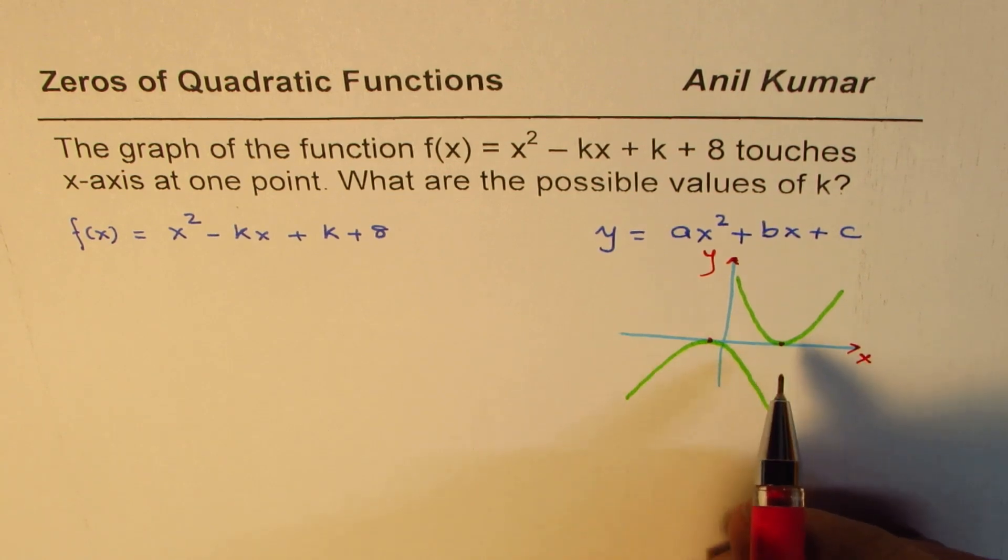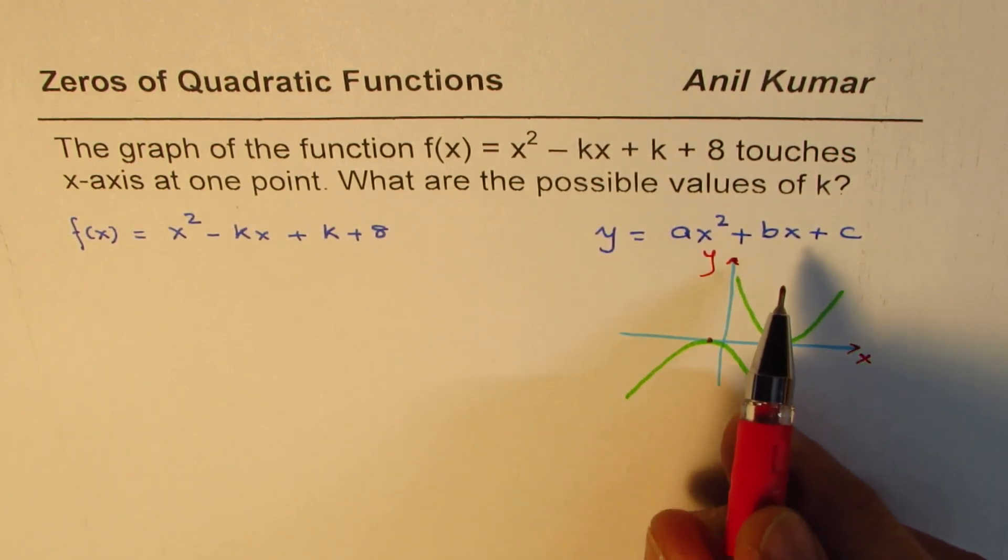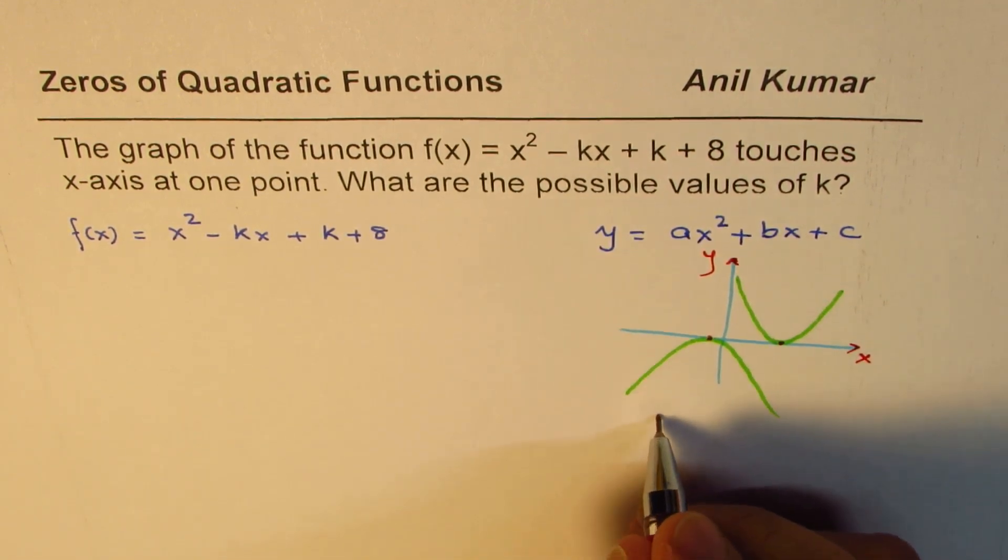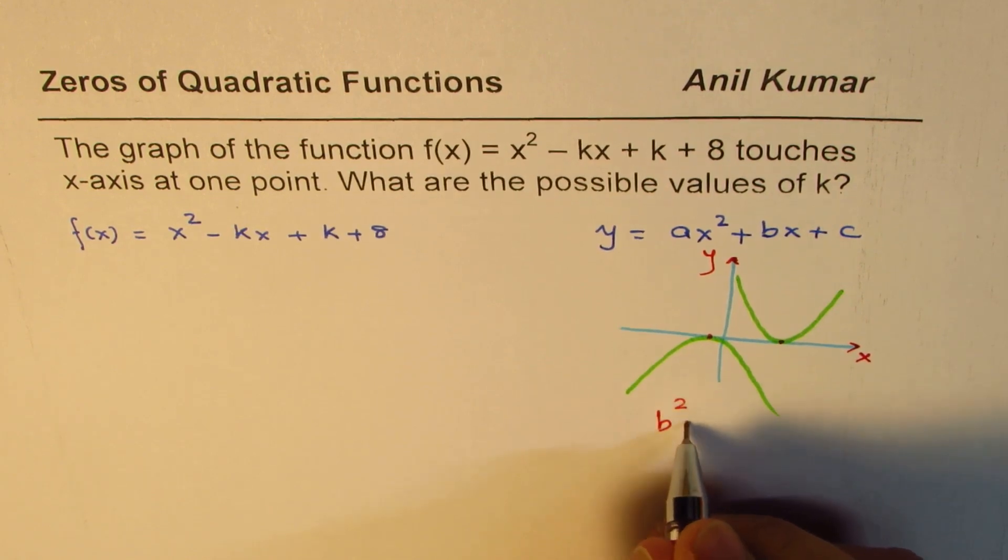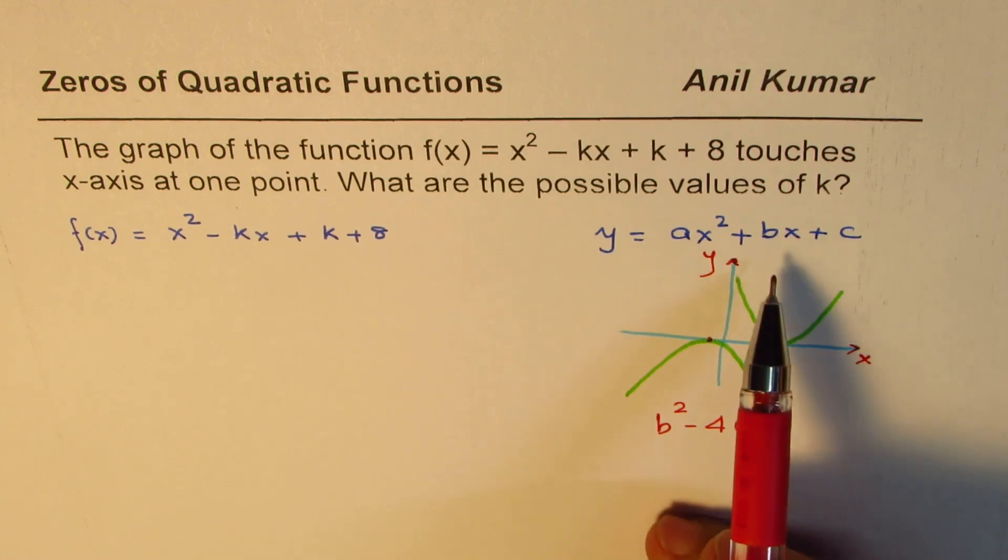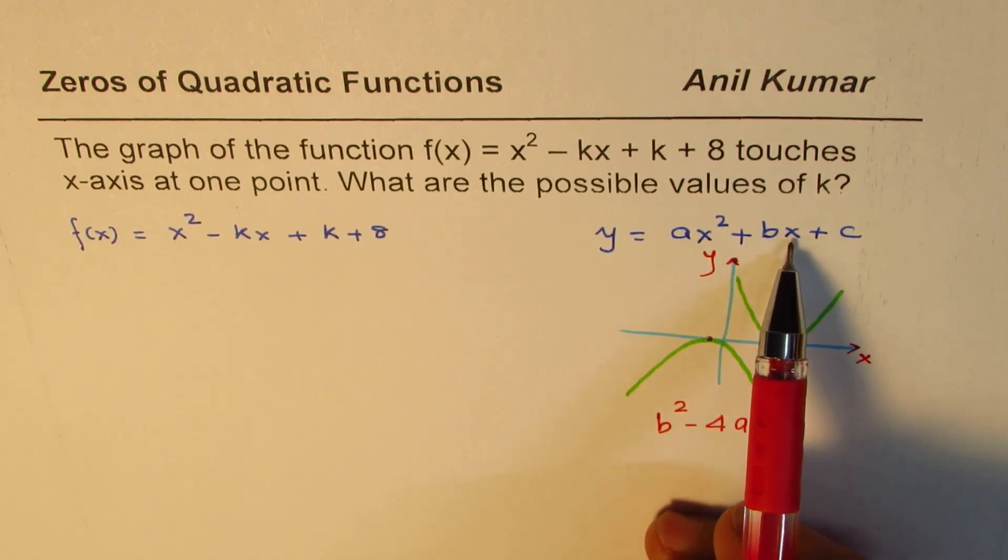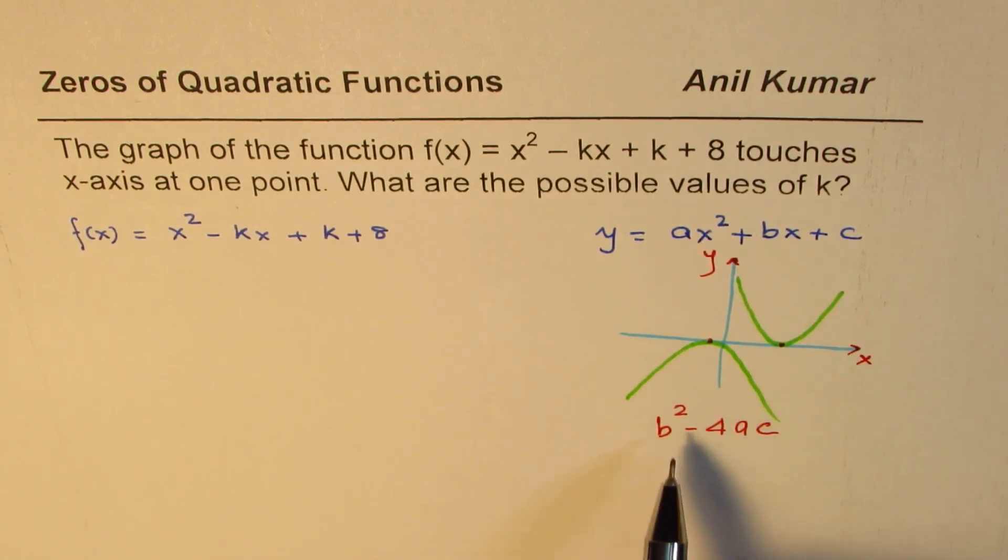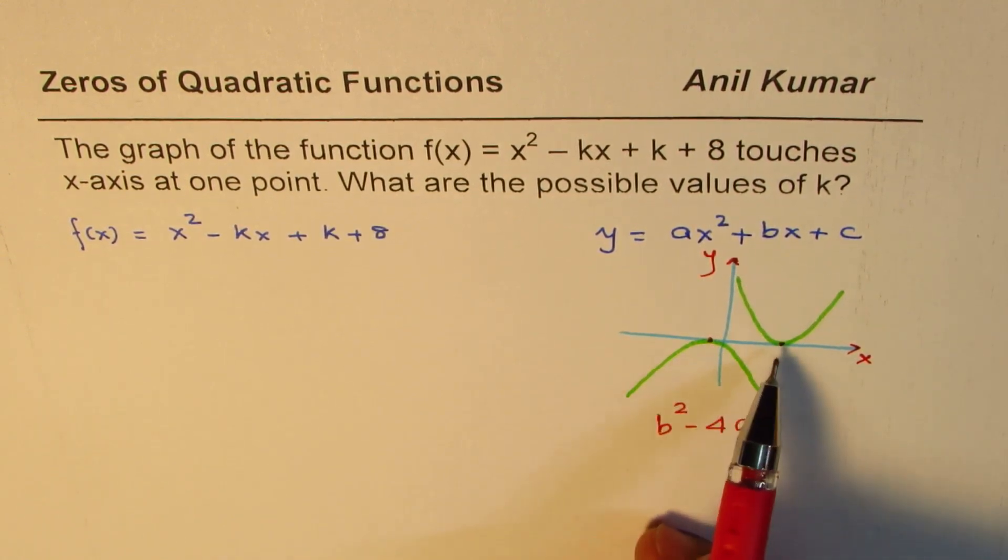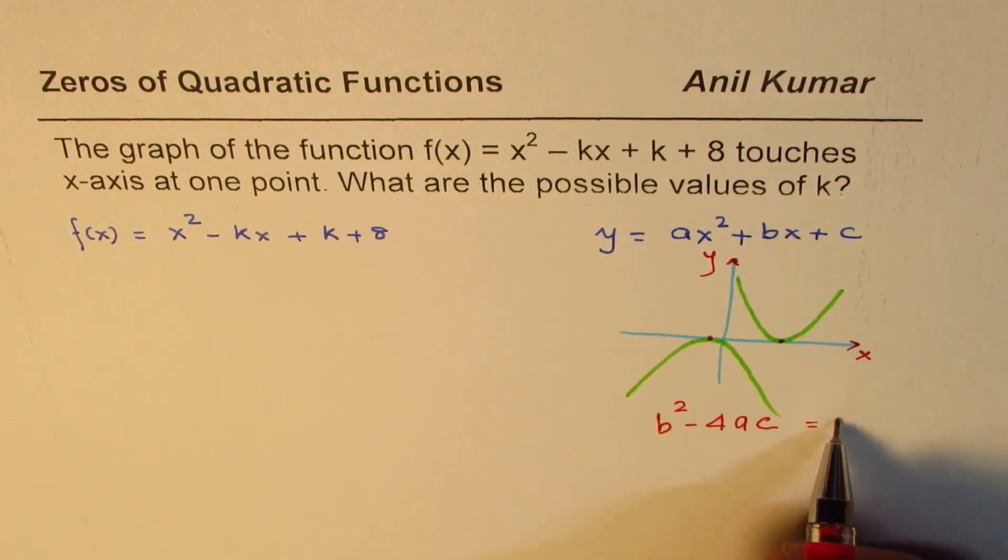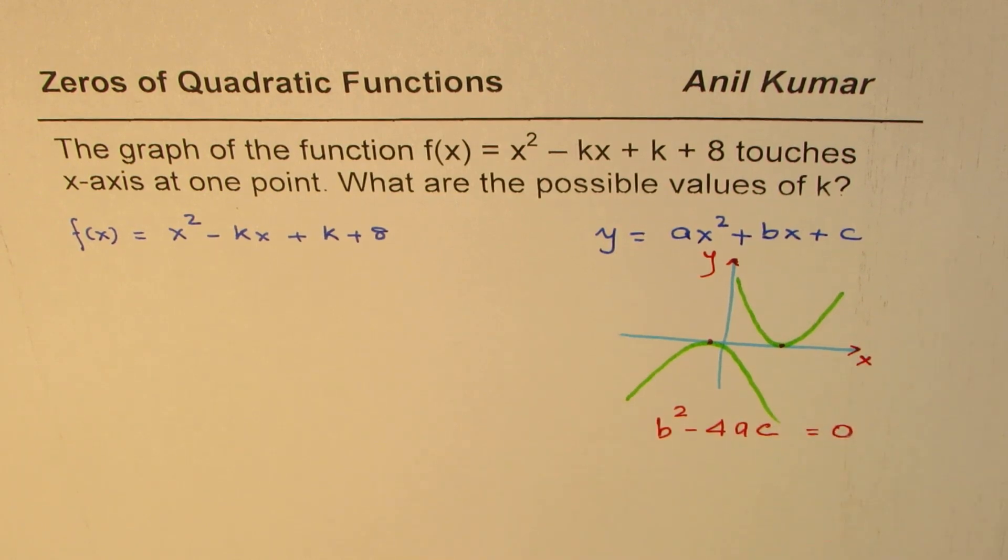Now you can use the discriminant to figure out the value of the coefficients which will make this possible. What I mean to say is that you could analyze b squared minus 4ac. That's the discriminant. b is the coefficient of x, a is the coefficient of x squared, and c is the constant.